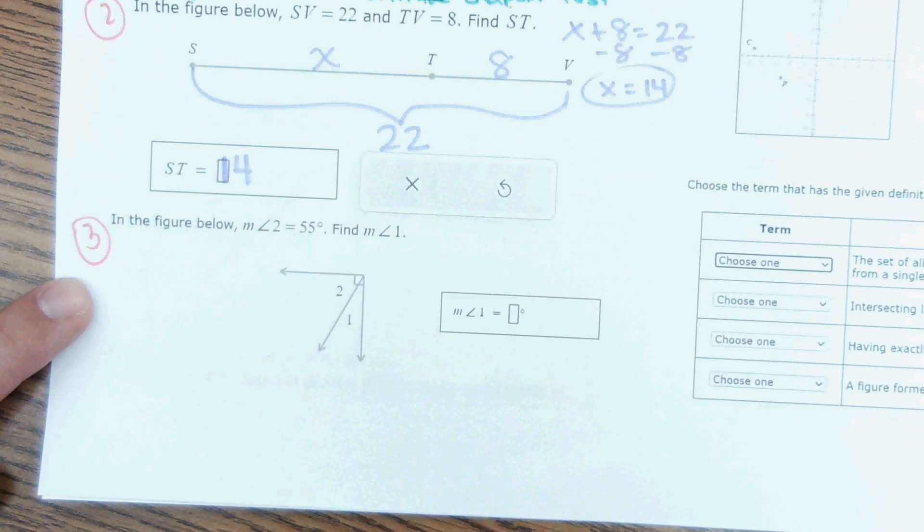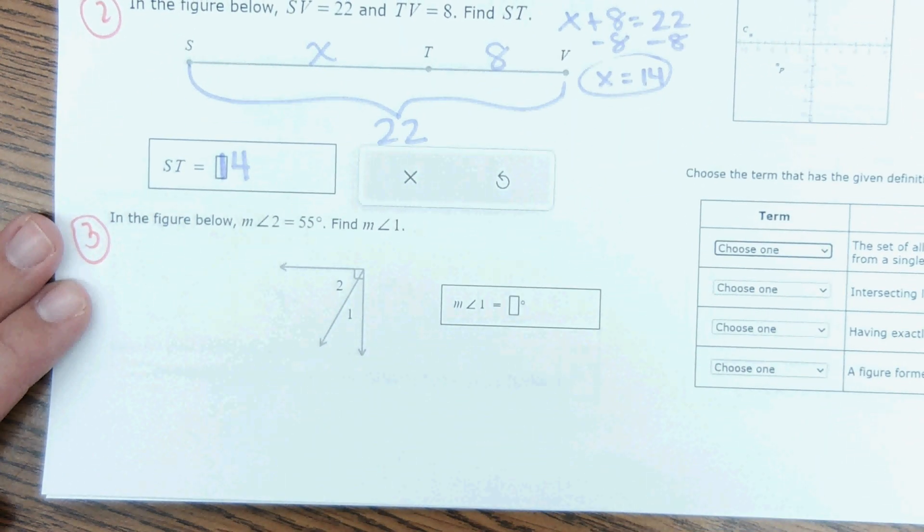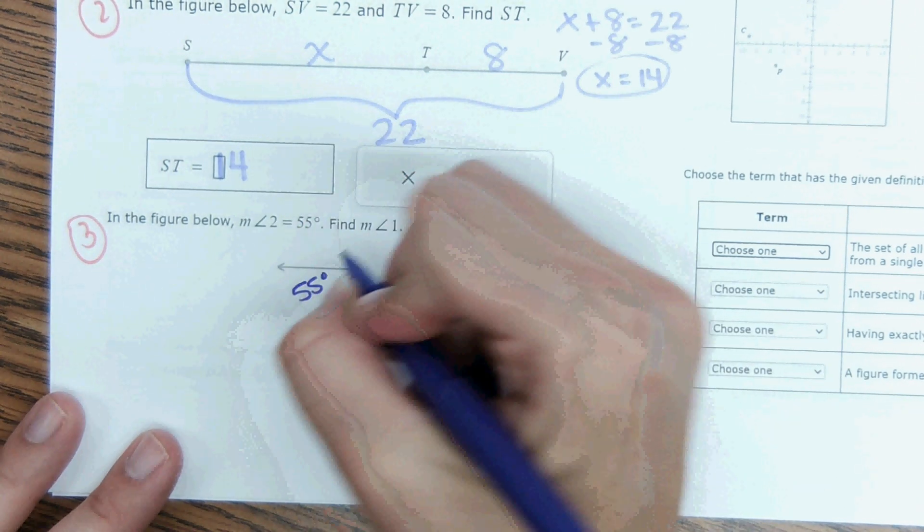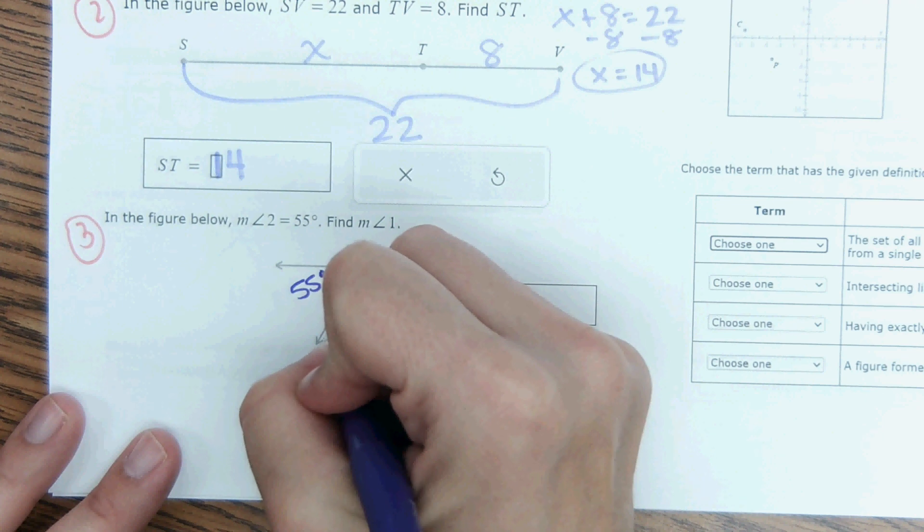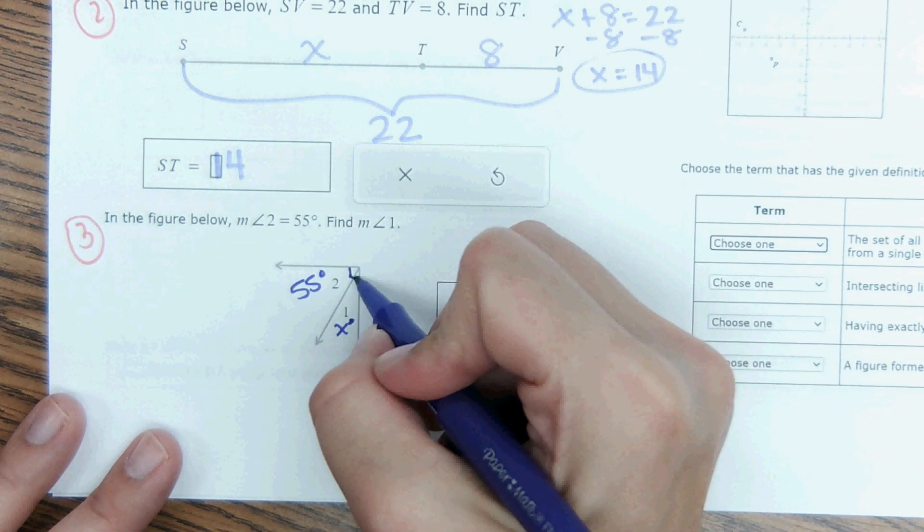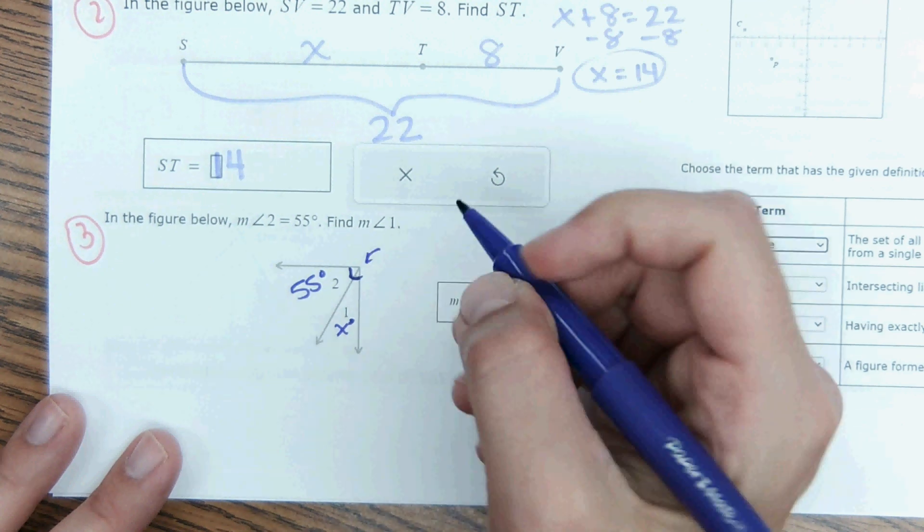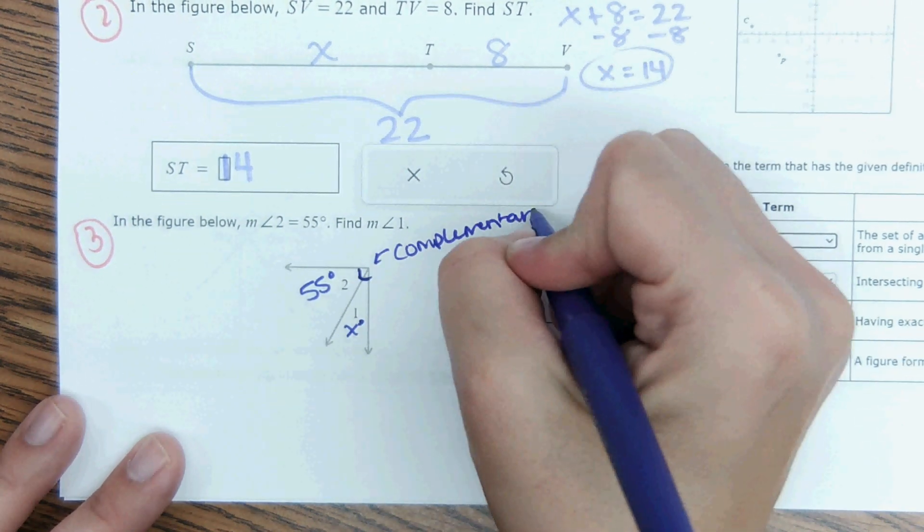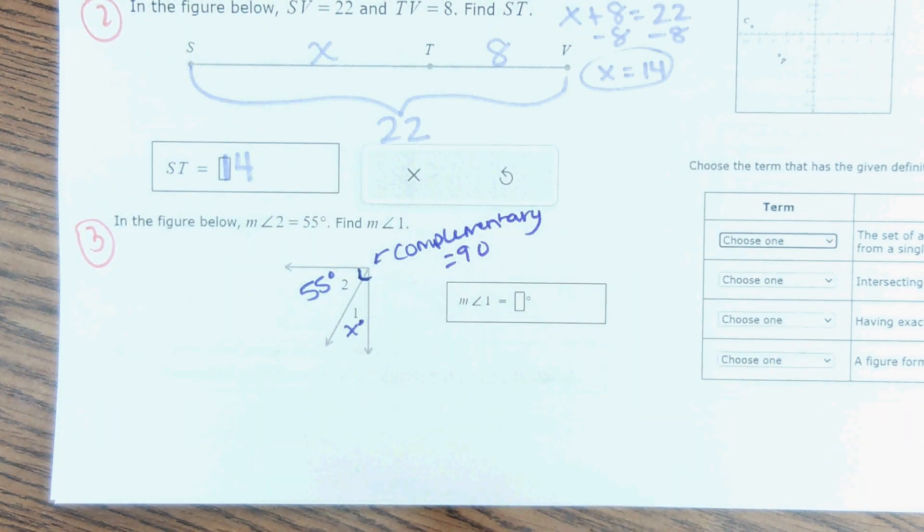Okay, next, number three. In the figure below, measure of angle two is 55 degrees. Find the measure of angle one right here. Here, it shows this little square right here. This square means that these angles are complementary. Meaning, they equal 90 degrees, or like add together to 90 degrees.